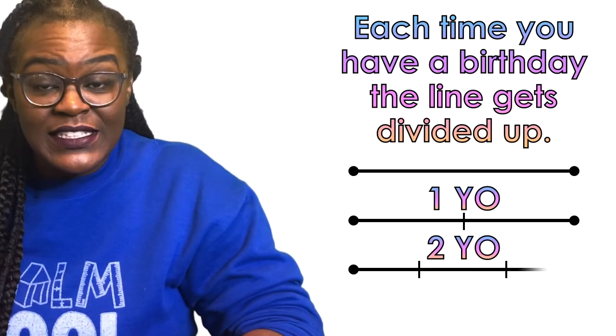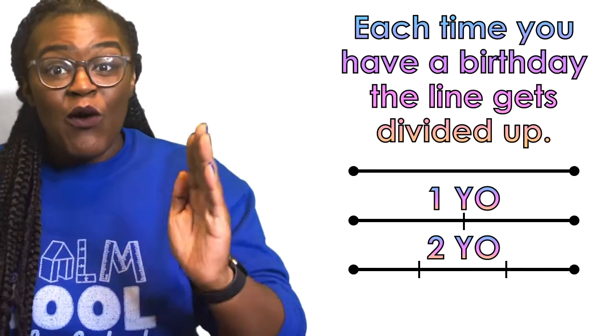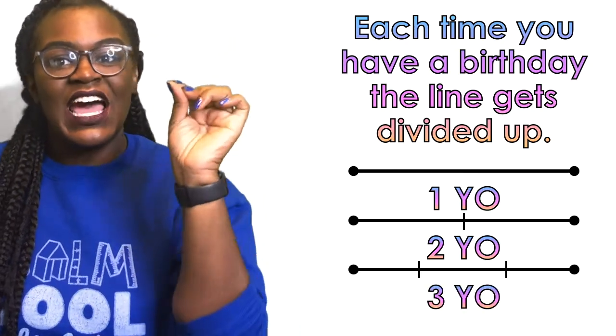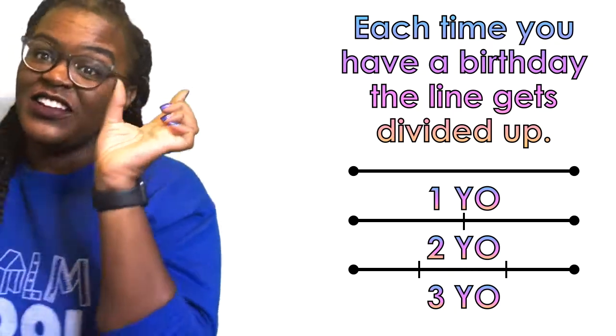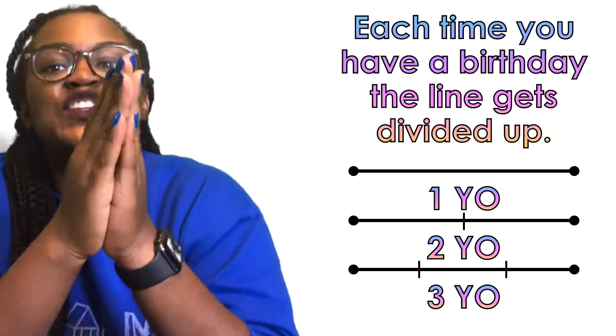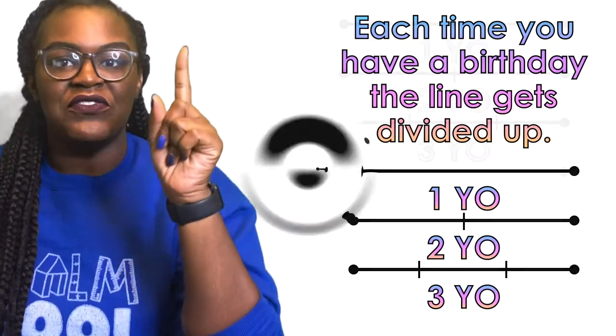When I'm three years old, now one year is a third of the line, right? So I take one third of the line is one year, another third of the line is another year, and then that last third of the line is one year. Remember, that entire line is representing your whole life.